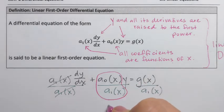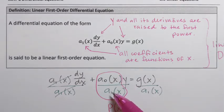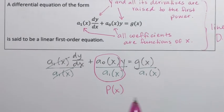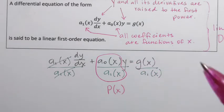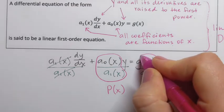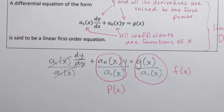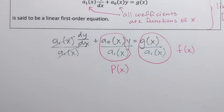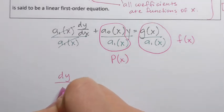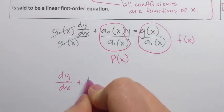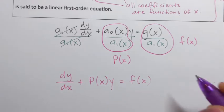Everything in front of y — the current coefficient of y — we're going to call P of x. Because a₀(x) divided by a₁(x) is a function, we call that function uppercase P of x. The right-hand side, g(x) over a₁(x), we call f of x. With that, we obtain the standard form of a linear equation: dy/dx plus P(x)y equals f(x).